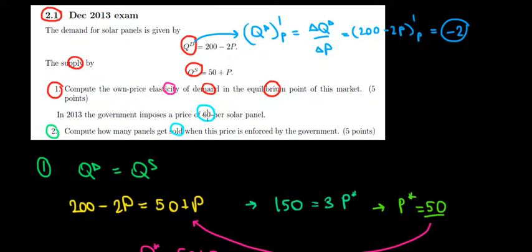We'll have to substitute the 60 into the demand and supply function and see whether there's going to be an excess demand or an excess supply. What we see is that on the market, we have a price equilibrium of 50, but the government is imposing the price higher than that. So let's see how that's going to distort the market.